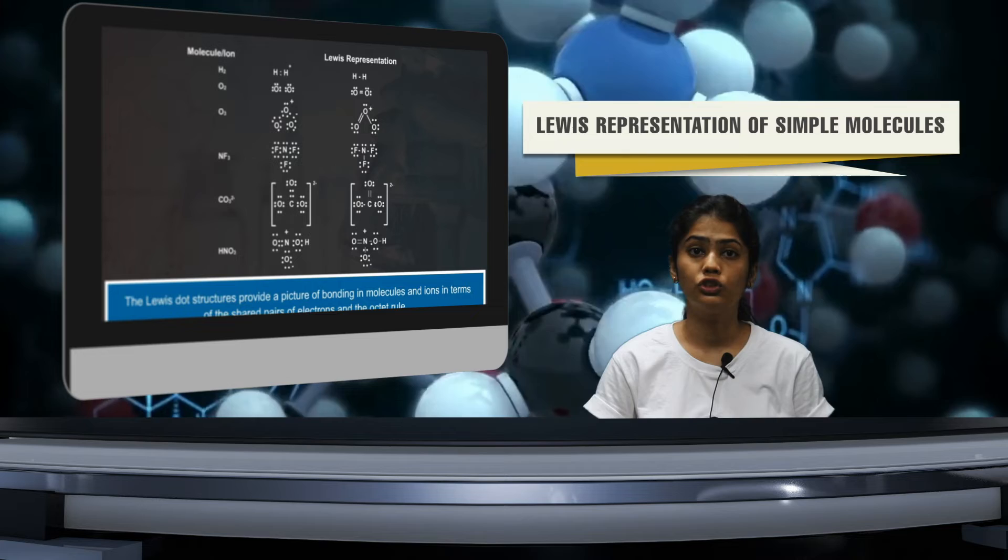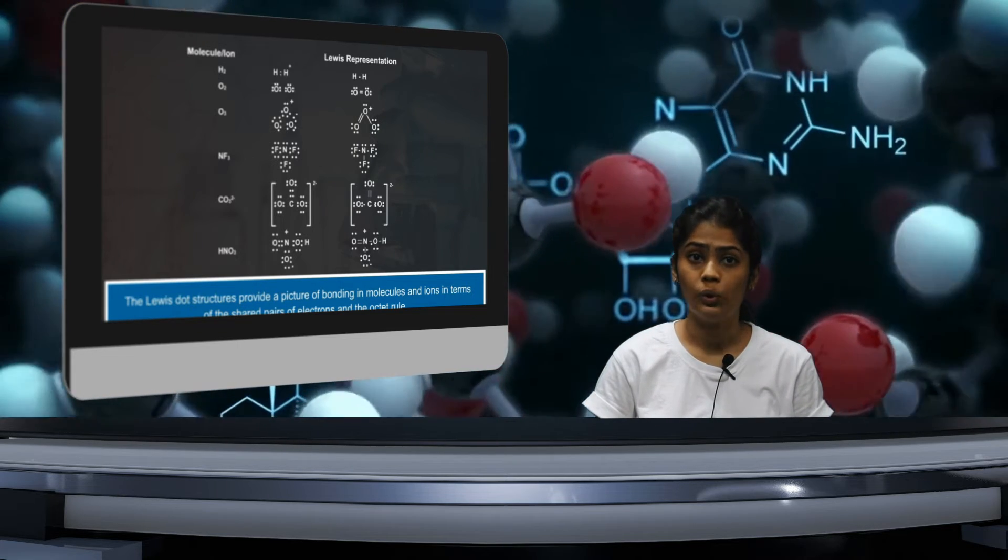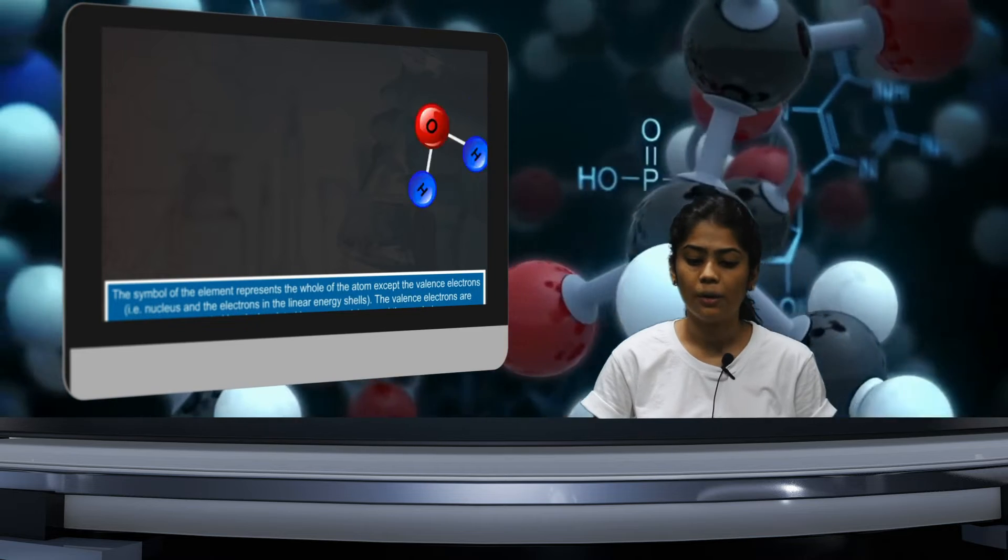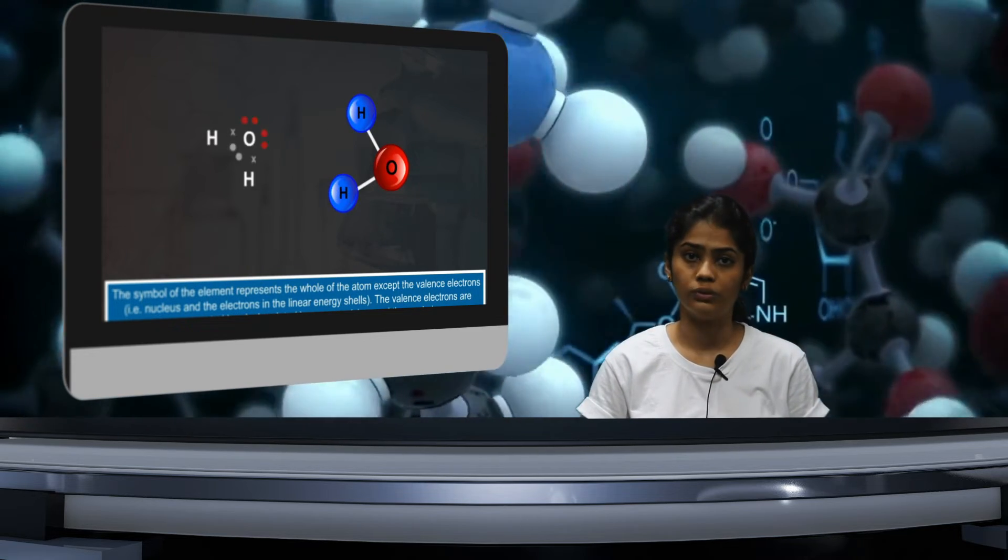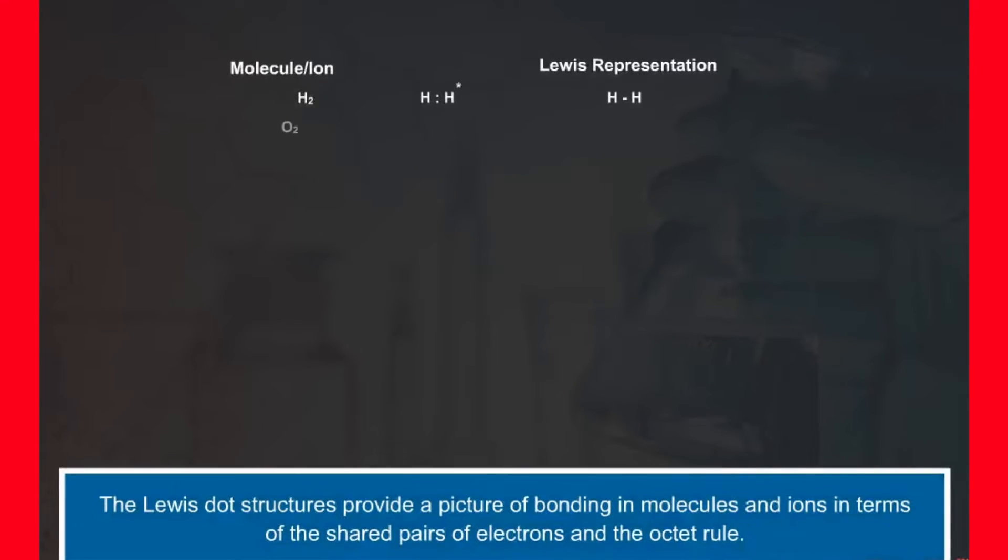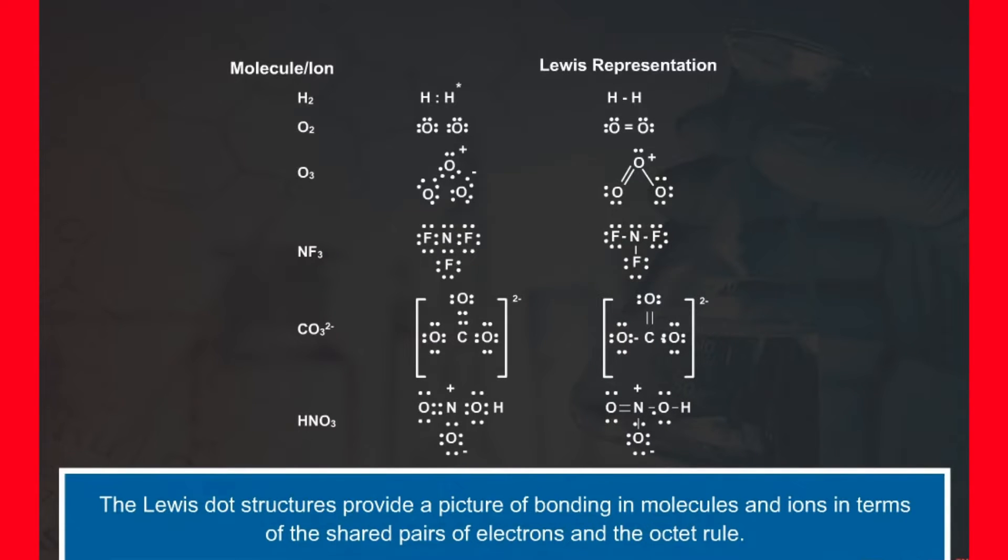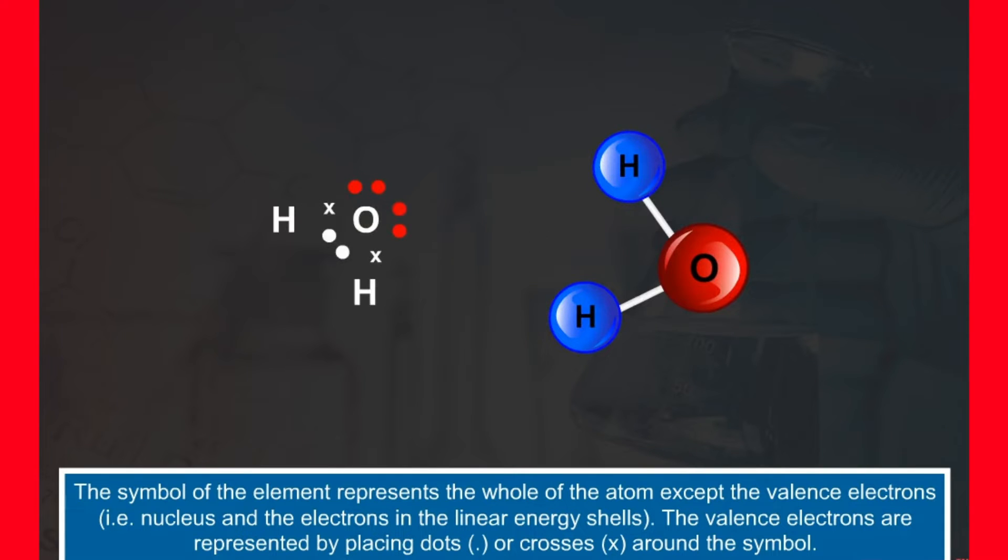Since we have looked at the approach that was taken into account by Lewis, we will be now studying about Lewis representation of simple molecules. The Lewis dot structures provide a picture of bonding in molecules and ions in terms of the shared pairs of electrons and the octet rule. The symbol of the element represents the whole of the atom except the valence electrons, that is nucleus and the electrons in the inner energy shells. The valence electrons are represented by placing dots or crosses around the symbol.